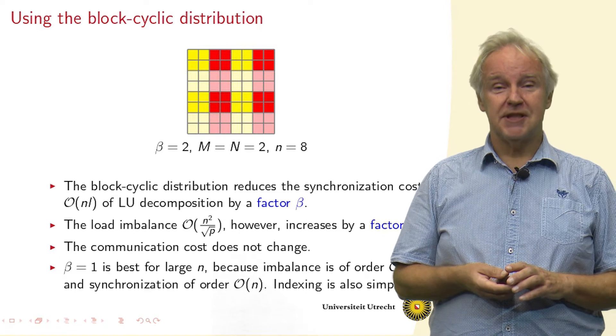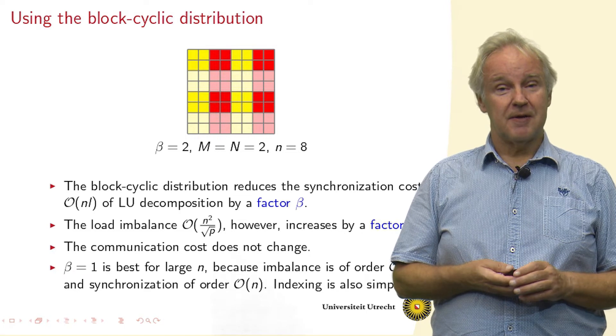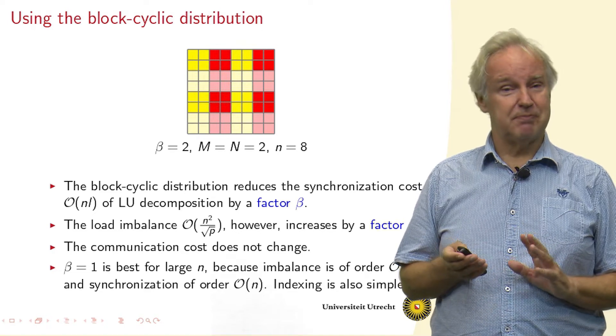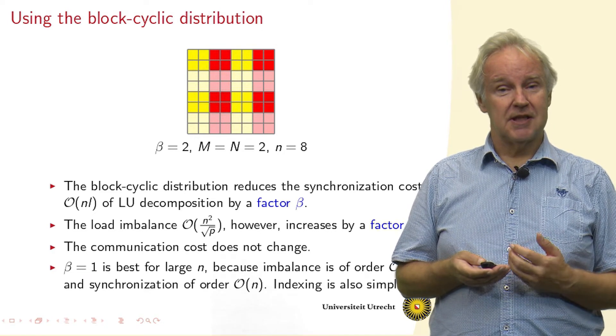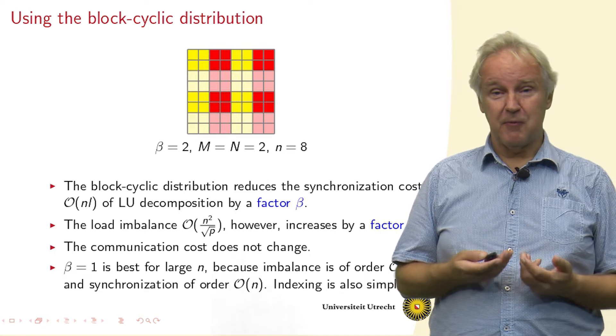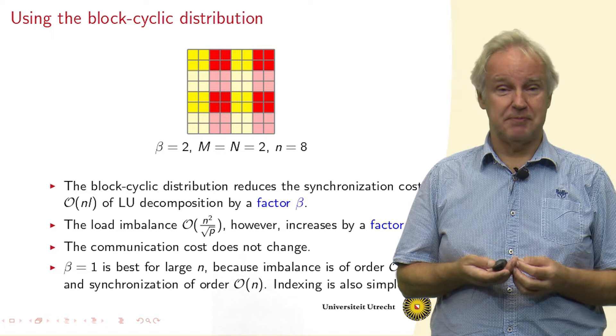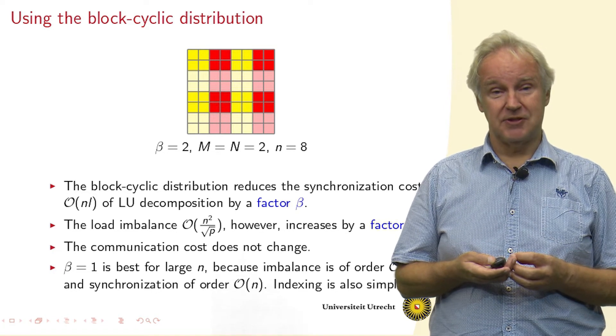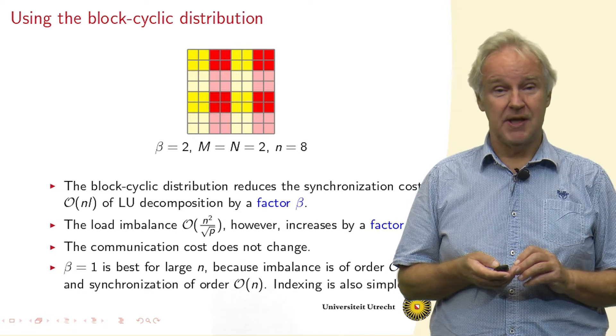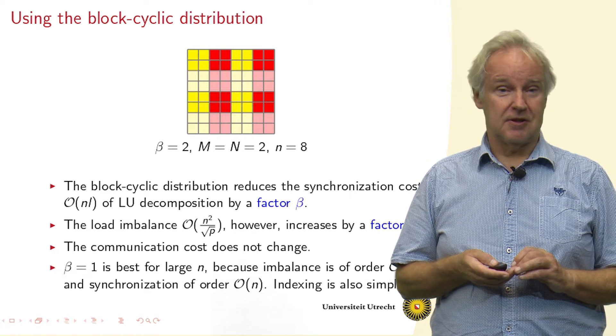Now, if we use this distribution within LU decomposition, then it has some effects. First of all, the synchronization, if we don't have pivoting, then the synchronization is reduced by a factor of β. Because we can handle β columns of the matrix within a single super step. So that's an advantage. But synchronization is only of order N times L and it's less important than communication and also computation.